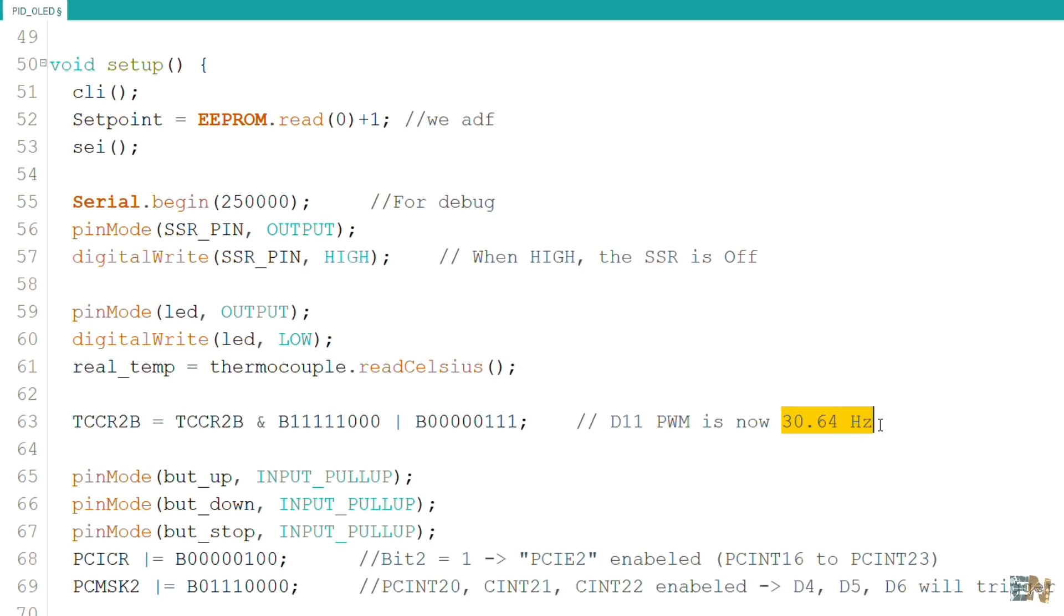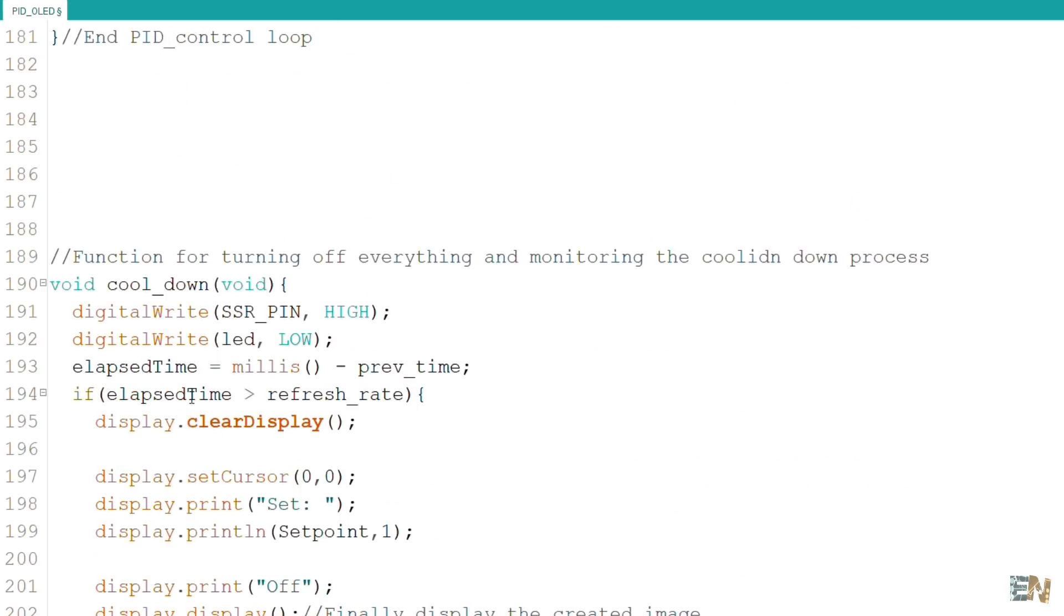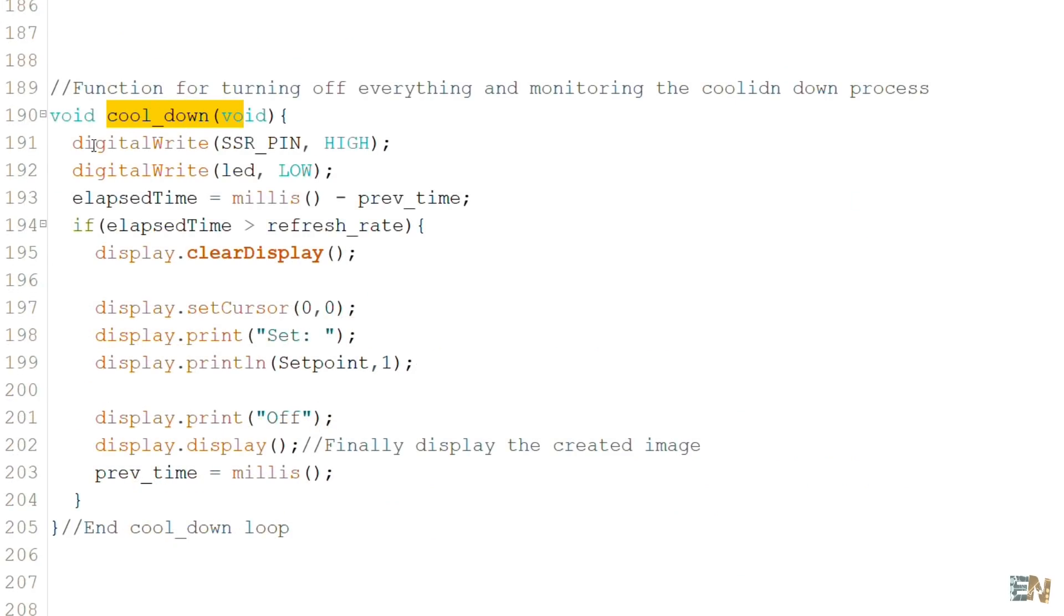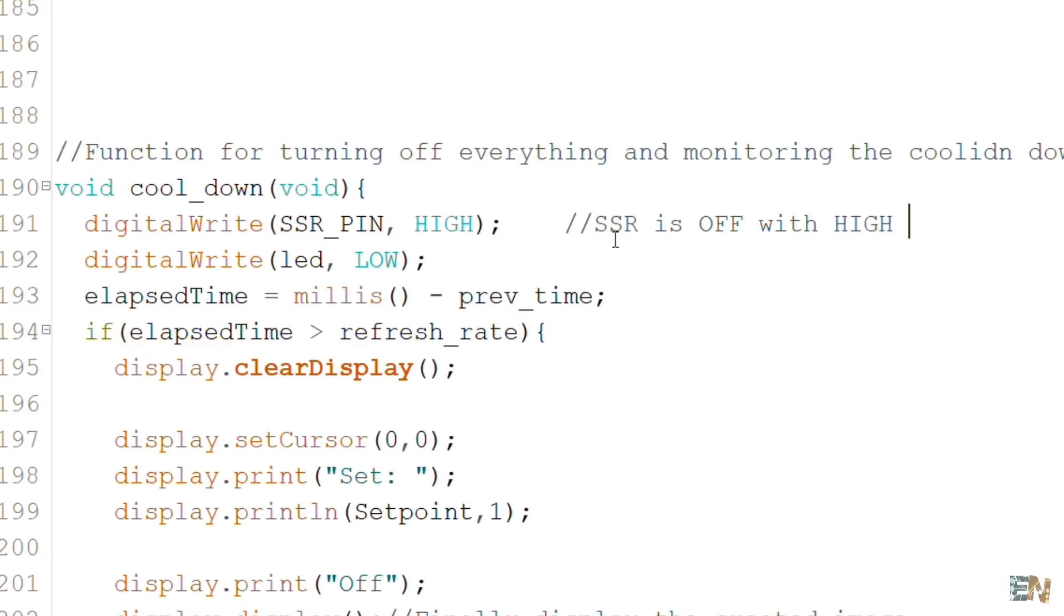With these lines in the code, I set that pulse to 30Hz. When we power off the controller, we go to the cooldown loop and here we power off the relay but we are still monitoring the temperature.